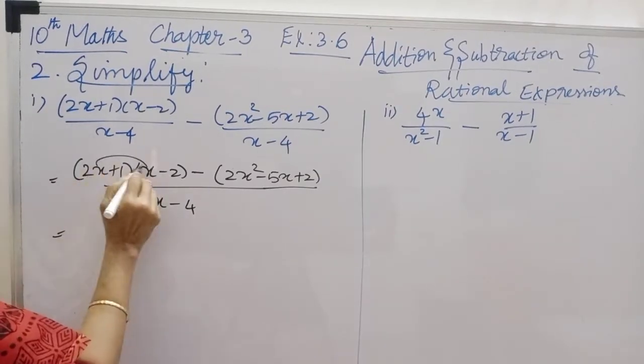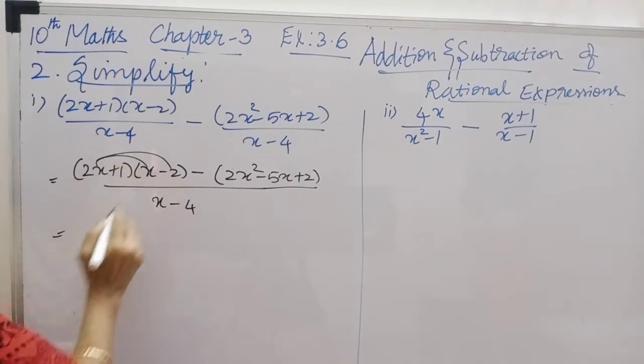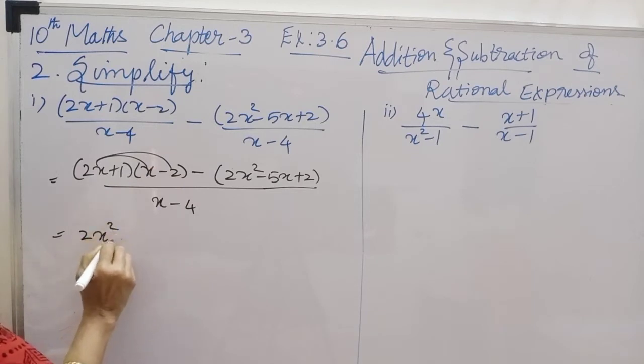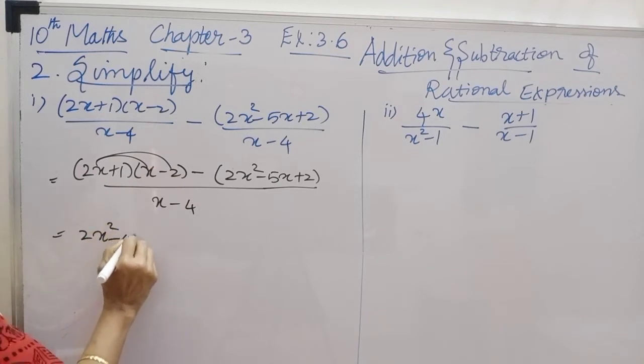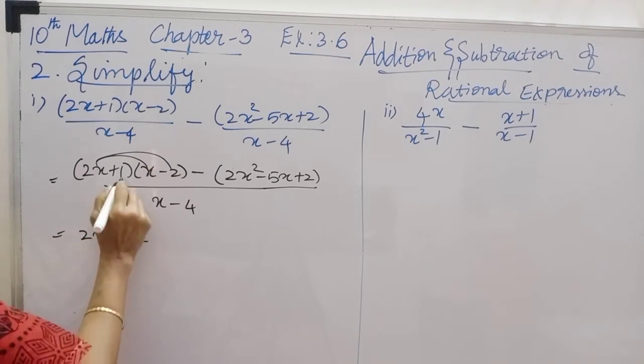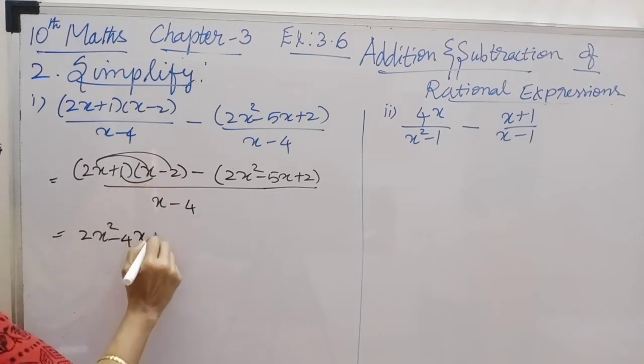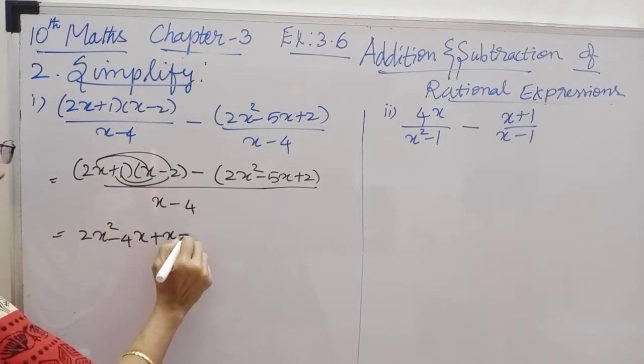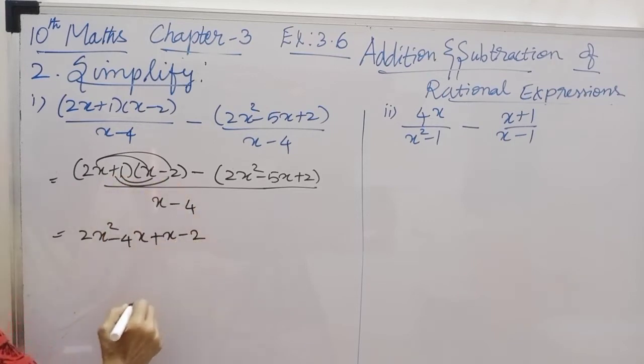We will expand this. We will get 2x squared minus 4x, then plus x, and into minus minus 2.